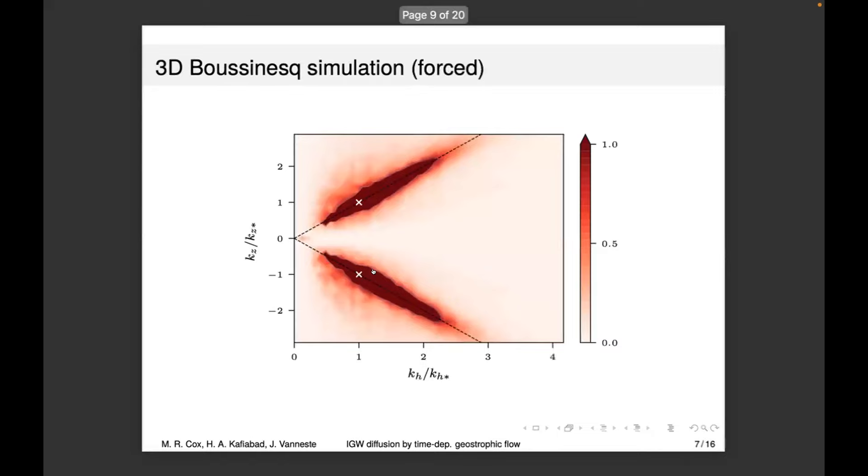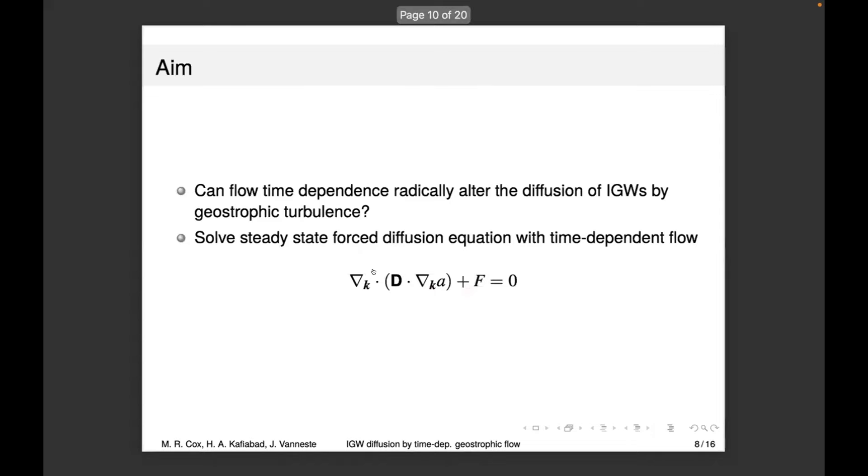This is another snapshot from a forced Boussinesq simulation run for a very long time. The y-axis is the vertical wave number and the x-axis is the horizontal wave number—like vertical slices of your cone. Darker areas indicate higher energy, lighter areas lower energy. You can see there is energy spread across this cone. Basically, I've been asking the question: can flow time dependence radically alter the diffusion of inertial gravity waves by geostrophic turbulence? Do we get significant diffusion across the cone of constant frequency? To do this, I've solved the steady-state forced diffusion equation.